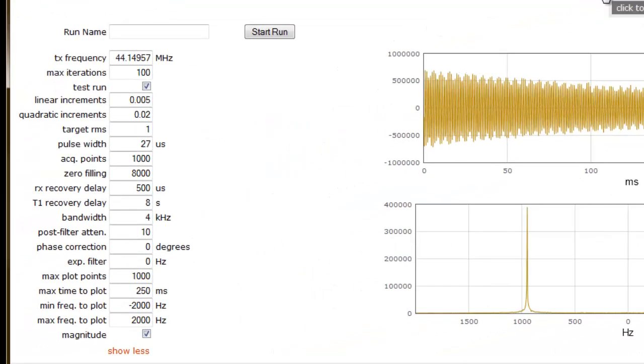So let's refresh our memory on some of the parameters we'll need to adjust. The AutoShim script executes a simplex optimization algorithm. This algorithm systematically adjusts the shim coil currents one at a time, and monitors the effect these changes have on the intensity of the spectrum signal after each adjustment.